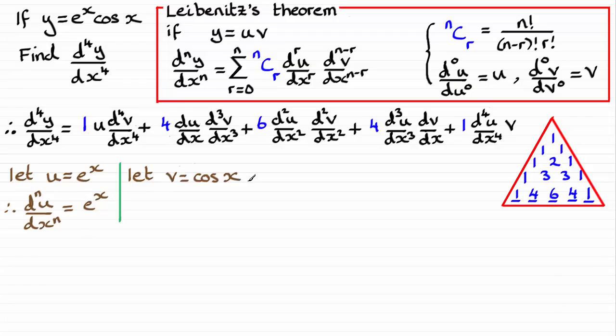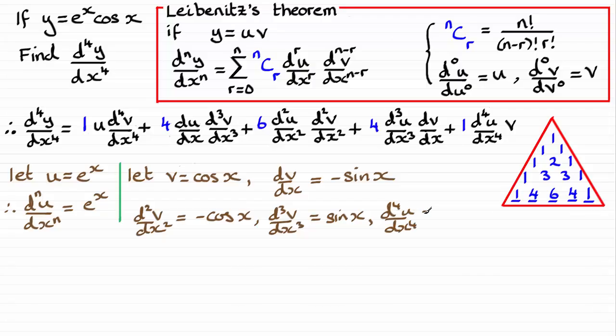When it comes to v equaling cosine of x, well, this is going to keep changing because we should know that dv by dx is equal to minus sine x. And when we have d2v by dx squared, that's going to be minus cosine of x. And we've got d3v by dx cubed. So if we differentiate minus cos x now with respect to x, we're going to get sine x. And then finally, d4v by dx to the 4, well, that's going to be cosine x.